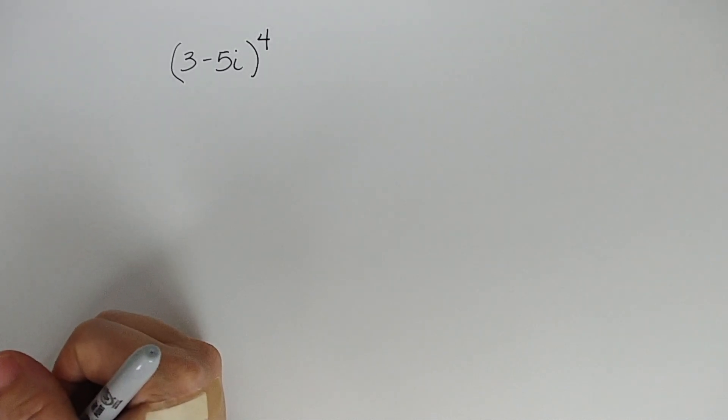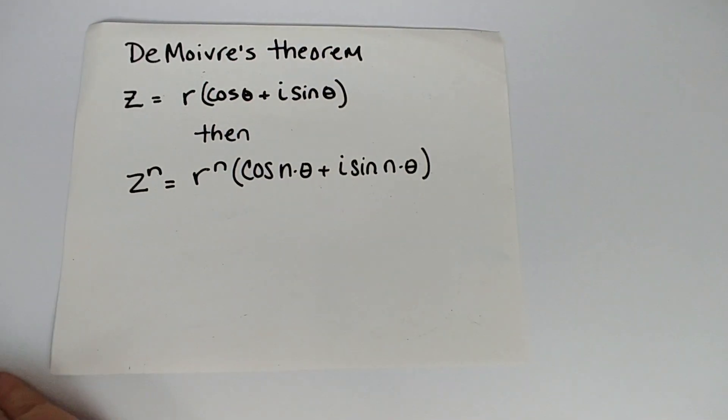The fact that it's in rectangular form and it says write in rectangular form should clue you in to the fact that we are first going to have to change forms and write it in polar form. We're going to go through how to do that. Let's look at DeMoivre's Theorem and we'll talk about why.